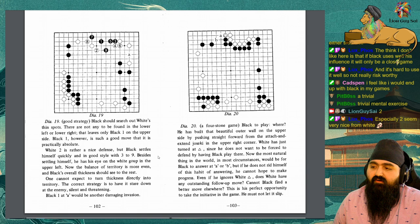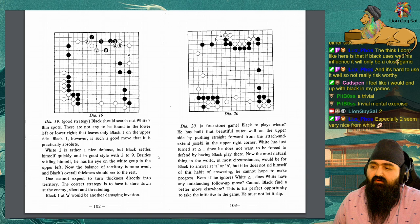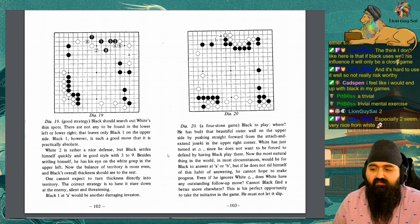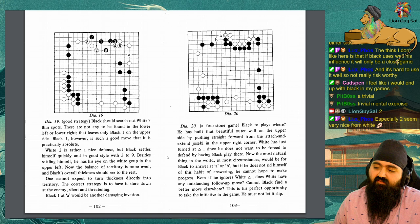Diagram 19. Good strategy. Black should search out white's thin spots. There are not any to be found in the lower left or the lower right. That leaves only black 1 on the upper side. Black 1, however, is such a good move that it is practically absolute. White 2 is a rather nice defense, but black settles himself quickly and in good style with 3 to 9. Besides settling himself, he has an eye on the white group in the upper left. Now, the balance of territory is more even, and black's overall thickness should see to the rest.